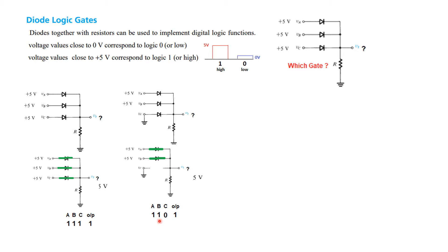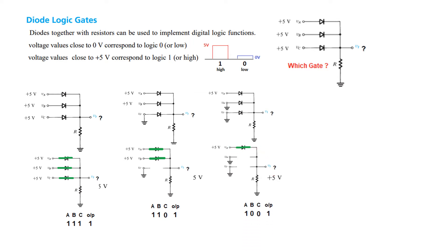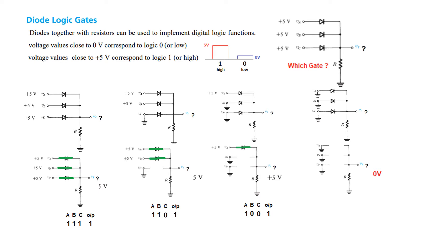So from here we can conclude that this is an OR gate, not an AND gate. Two of the inputs grounded still gives 5V output — logic 1, 0, 0 input gives output 1. And finally, if all three are connected to ground, all three are reverse biased, so the input is 0, 0, 0 and the output is also 0. This logic is for the OR gate, so we say that this is an OR gate.